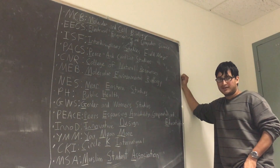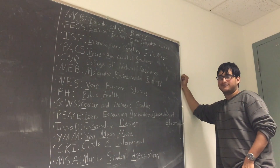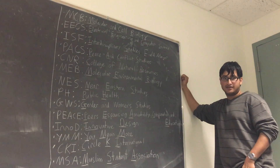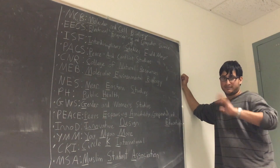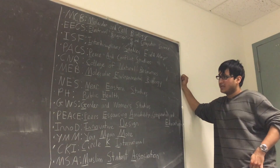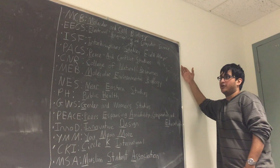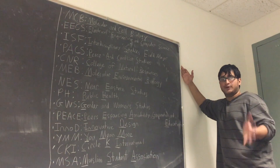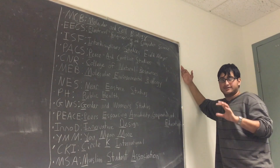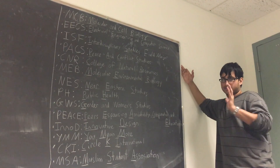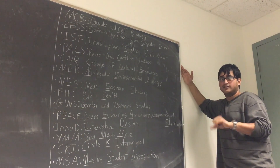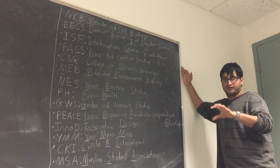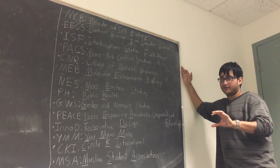The MEB major is kind of similar to MCB, except MEB is a BS versus a BA, although that doesn't really matter. MEB also requires you to take classes focusing not only on the molecule, but also on the organism and the environment, creating a more cohesive narrative of your biological understanding, whereas MCB focuses more on the molecule and a smaller scope.